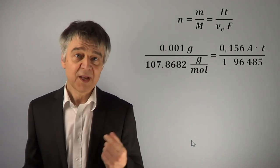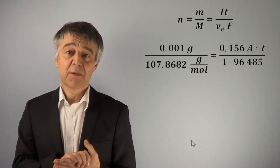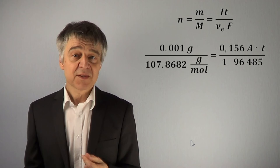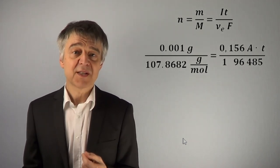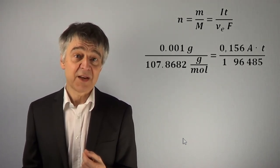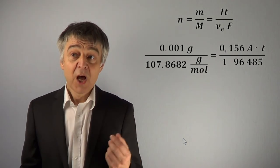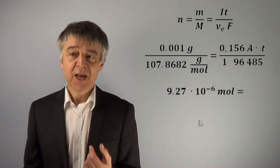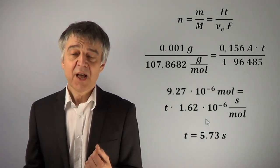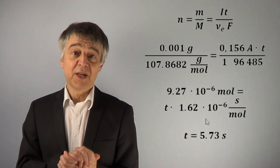nu equals 1, one electron is required to reduce silver plus ions, and Faraday constant F. We solve the equation for time and obtain 5.73 seconds.